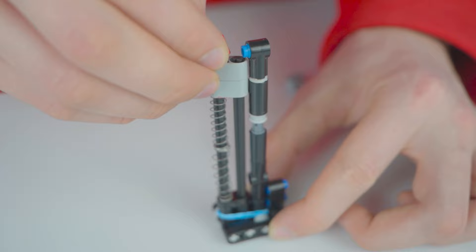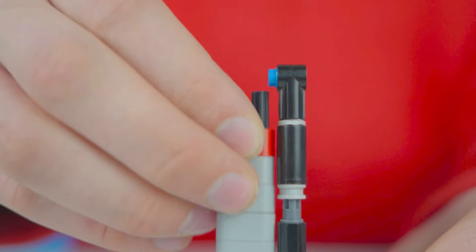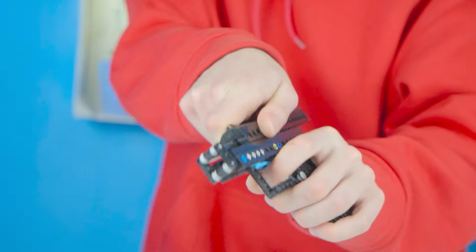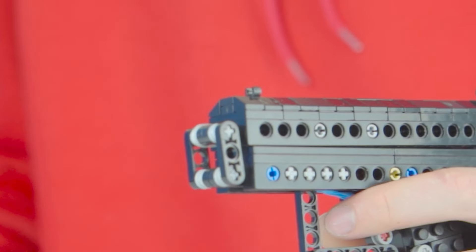We take out the magazine and insert the parts one by one. When the magazine is full, I insert it back into the gun. All that's left is to reload the bolt carrier. And we can test it.